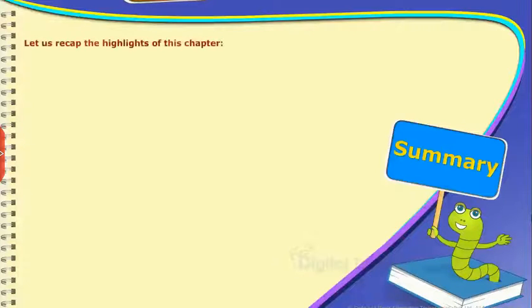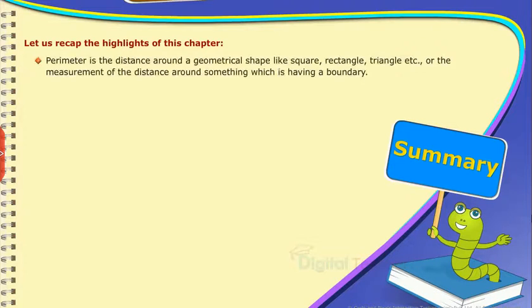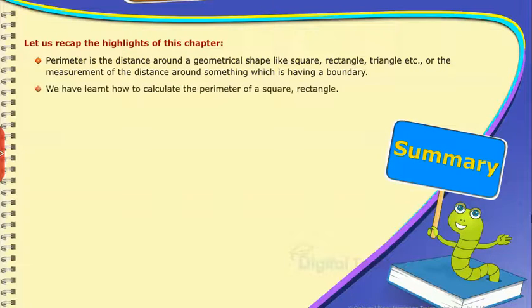Summary: Let us recap the highlights of this chapter. Perimeter is the distance around a geometrical shape like square, rectangle, triangle, etc., or the measurement of the distance around something which is having a boundary. We have learned how to calculate the perimeter of a square, rectangle, etc.